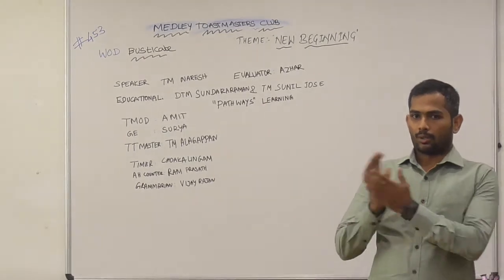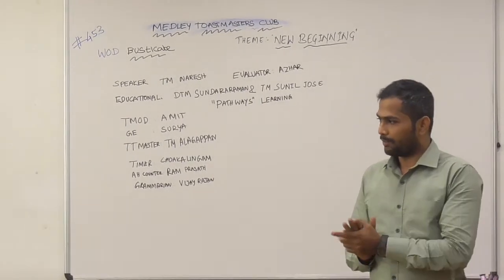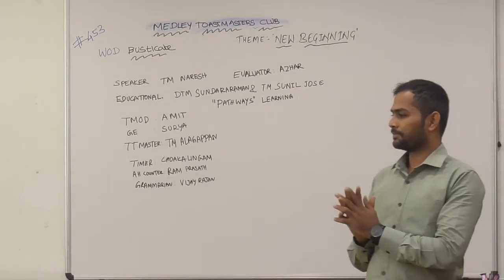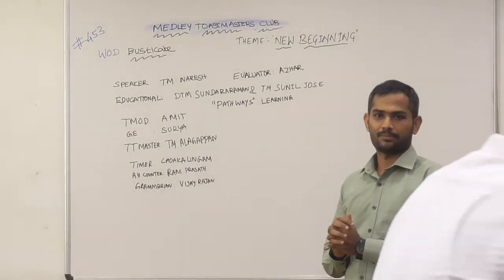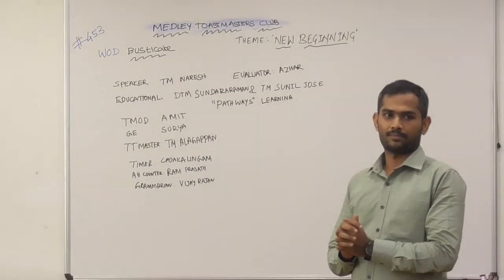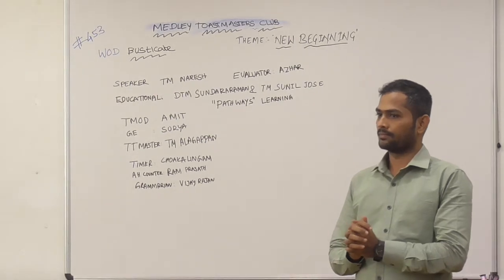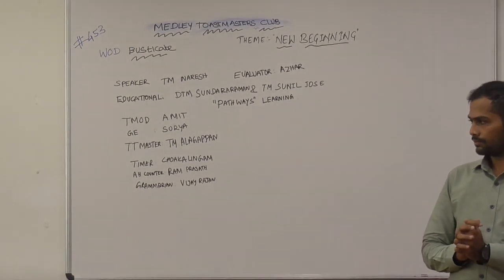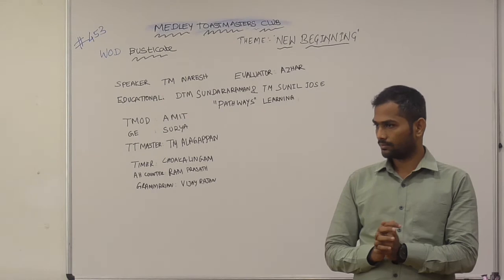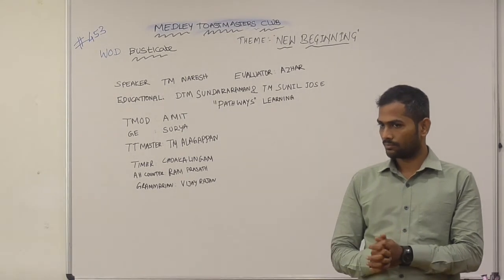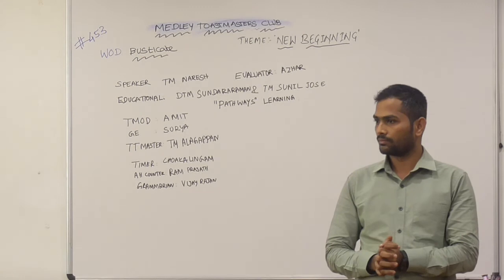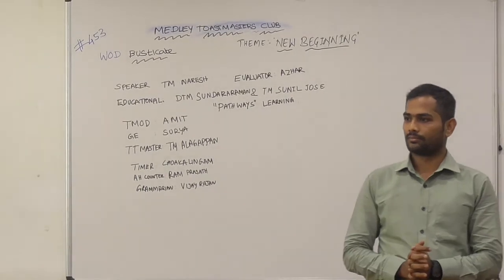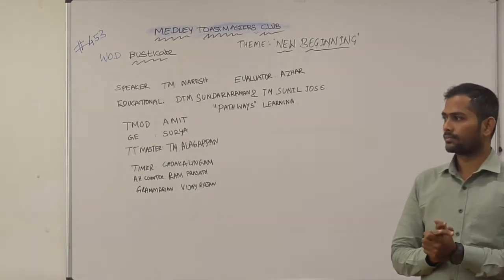Thank you. I would like to call upon Toastmaster Chokalingam to read out his objectives for ah-counter. Thank you, General Evaluator. Hello Toastmasters and welcome guests. My duty as an ah-counter is to listen to the regular distractions such as um, ah, you know, and, so, but, and other filler words or sounds. I will also keep track of the repeated words like the, the, I, I. Lastly, I will keep track of the long pauses when they are distracted. I will keep track of all these speaking errors in writing for each speaker and give my report at the end of the meeting when General Evaluator calls upon. Thank you.